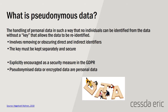Let us define a few terms from GDPR. Pseudonymization refers to handling personal data in such a way that no individual can be identified from the data without a key that allows re-identification. It involves removing or obscuring direct and indirect identifiers, and the key must be kept separate and secure. This is especially important for sensitive data — as soon as possible, the anonymized data should be what most researchers see. However, pseudonymized or encrypted data are still personal data, so GDPR restrictions still apply.